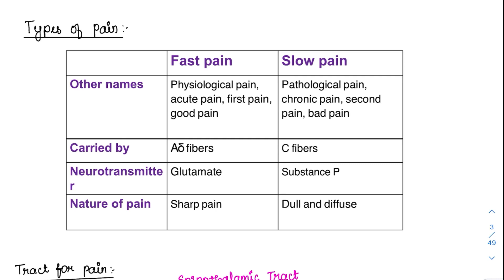Fast pain is also called physiological pain. It is acute in nature because we immediately withdraw. It is also called first pain and is considered good pain. Slow pain is called pathological pain because whenever there is tissue damage or injury, this pain starts to act. It is a chronic type of pain — second pain or bad pain. But it is not completely bad because it still helps prevent further injury to that area.